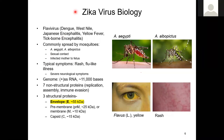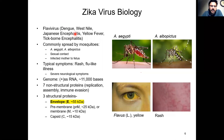Zika is a flavivirus and hence is related to several other common pathogens of humans, including those found in the Indian subcontinent. Zika is commonly spread by mosquitoes, although it can also be spread through sexual contact and from an infected mother to an unborn fetus. A Zika virus infection typically causes a mild rash and a flu-like illness, although during the latest epidemic a correlation was made between Zika virus infections and severe neurological symptoms in humans.